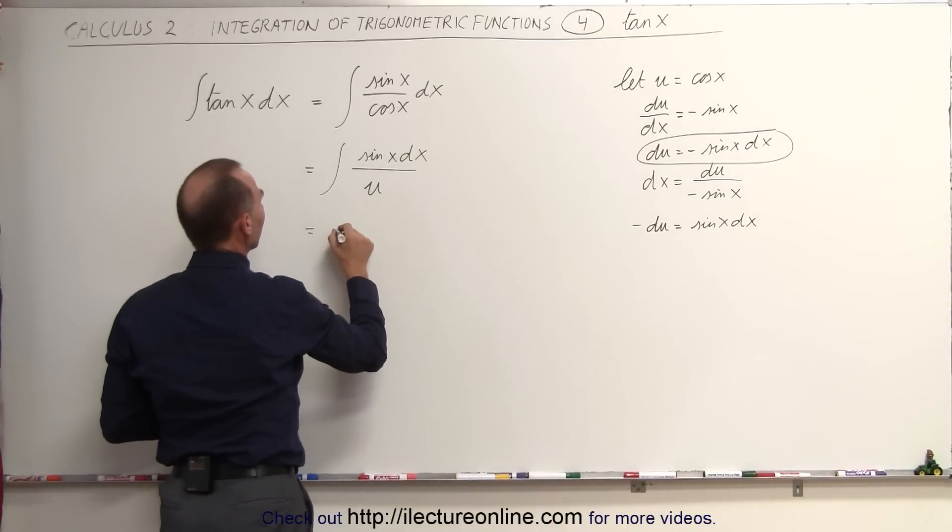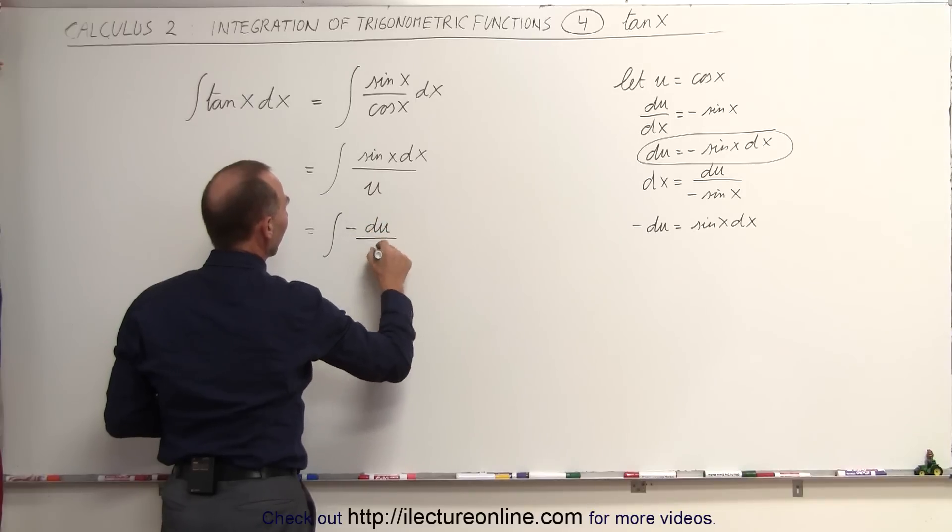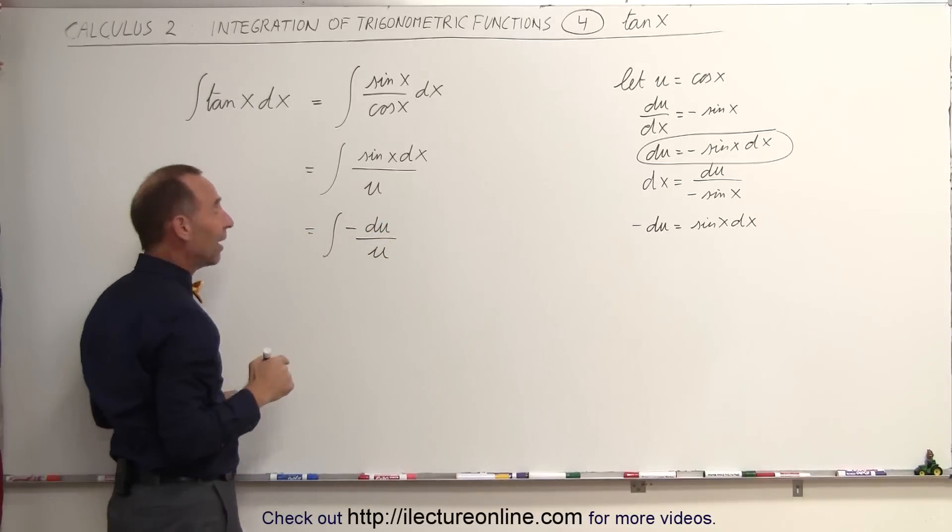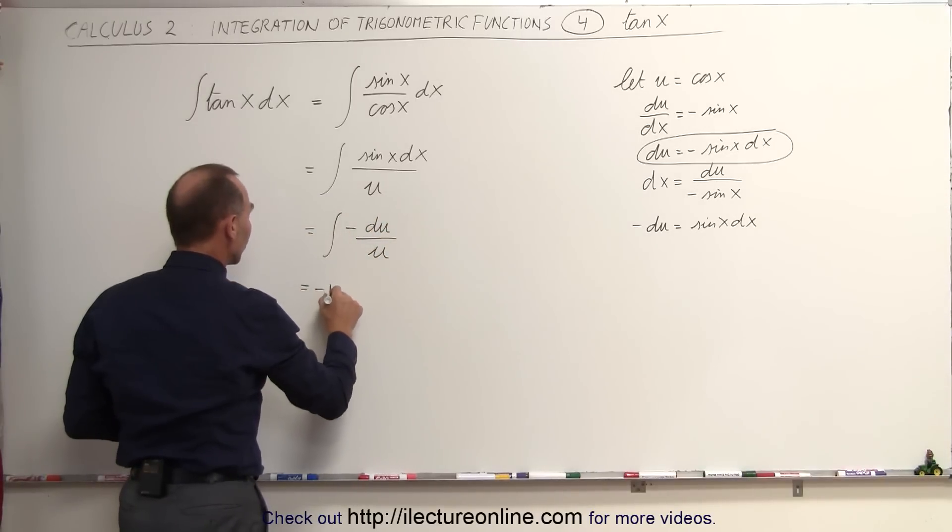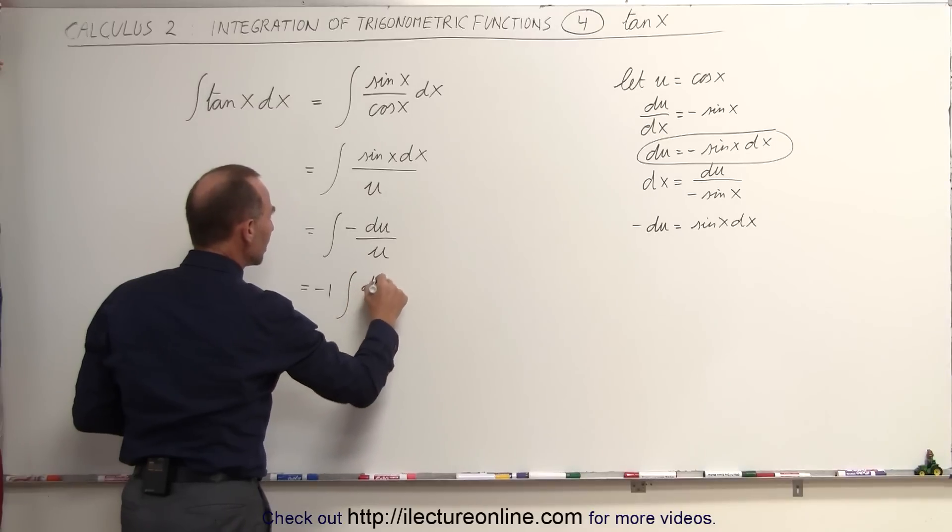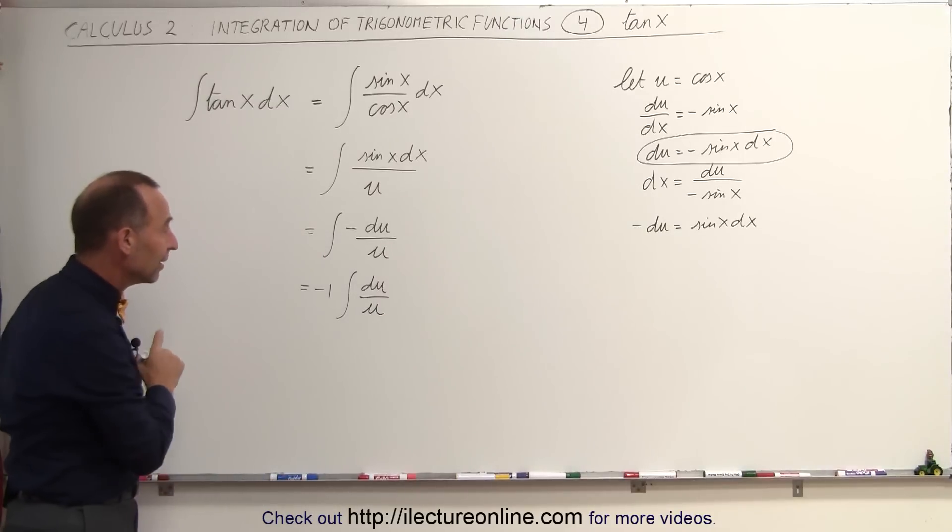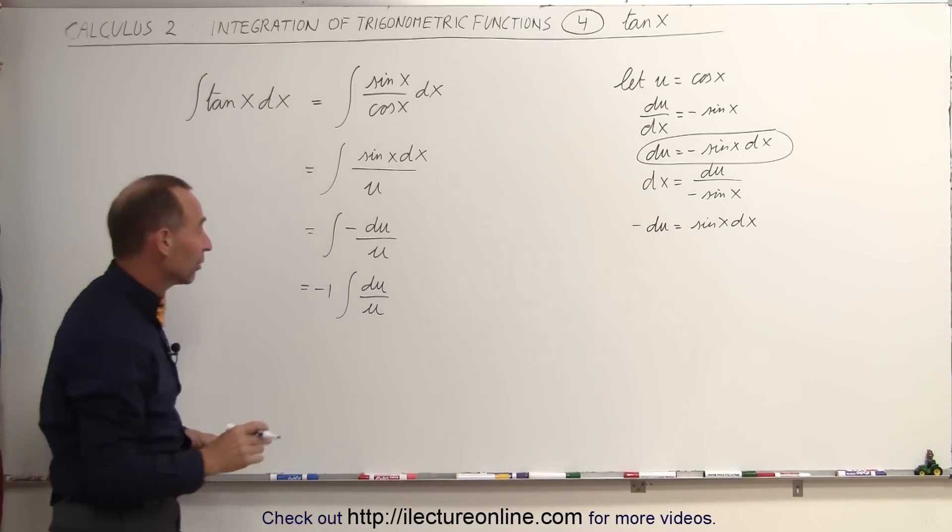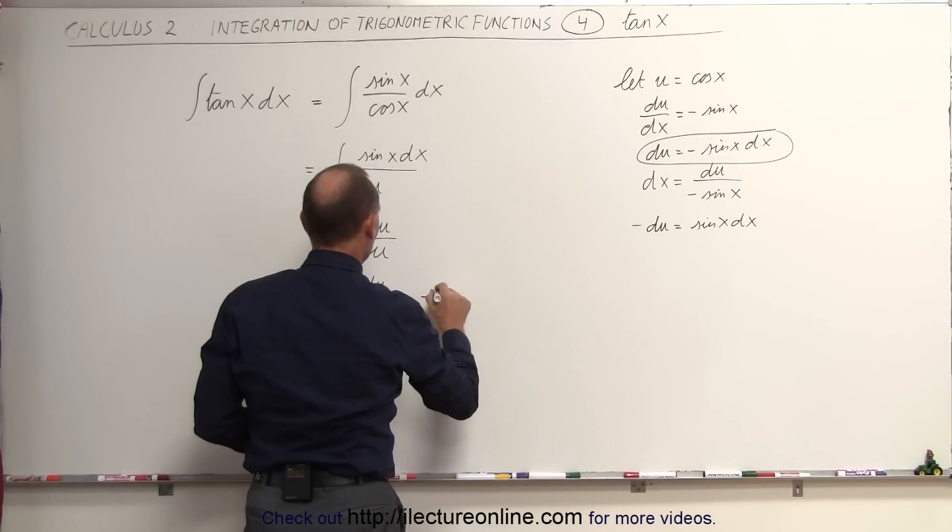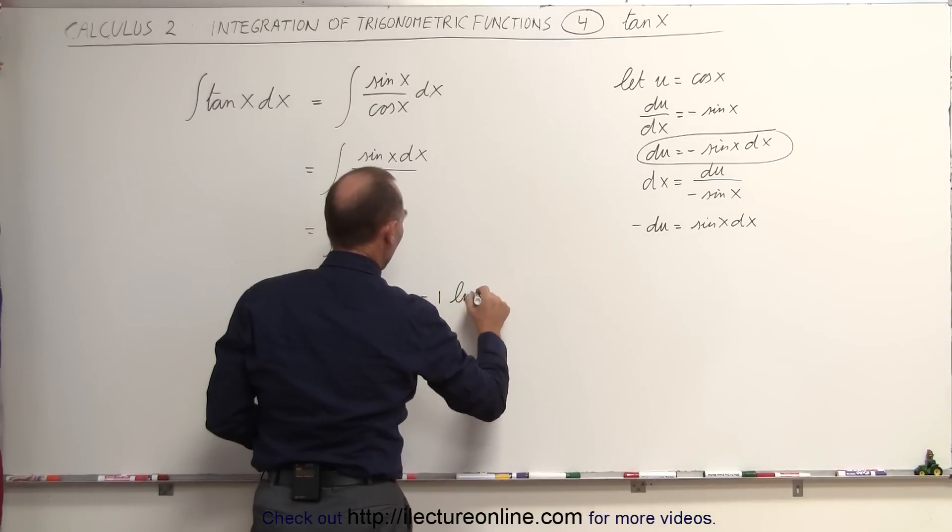So this can now be written as the integral of minus du divided by u, and then we take the negative outside. This can be written as minus 1 times the integral of du over u. And now we can go ahead and integrate this, because that's equal to the natural log of u. This is equal to minus 1 times the natural log of u.